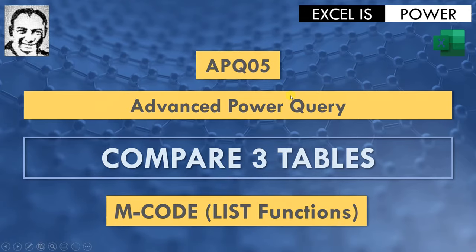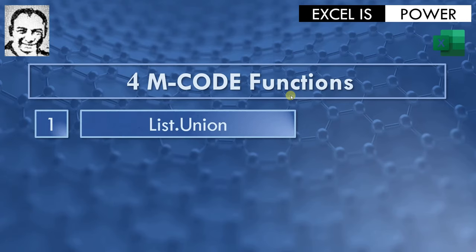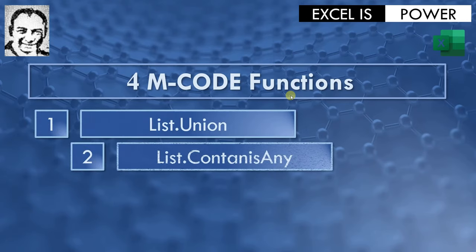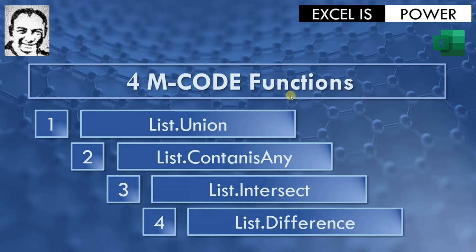Hello and welcome to a new video from the Advanced Power Query series, Video APQ05. In this video, we are going to see how to compare between three tables using M code functions, focusing on list functions. We are going to discuss four specific functions: List.Union, List.ContainsAny, List.Intersect, and List.Difference.